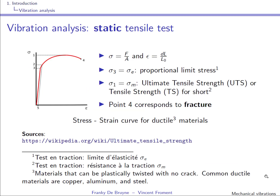You certainly remember the curve obtained using a static tensile test. It's for ductile materials such as aluminum, copper, and steel. These ductile materials display linear elastic behavior up to a certain point, then you still have elastic behavior but it becomes nonlinear. Up to another point, you have elastic behavior, meaning the deformation is recoverable. Beyond that point, the deformation is non-recoverable — the material will not return to its original shape and size.